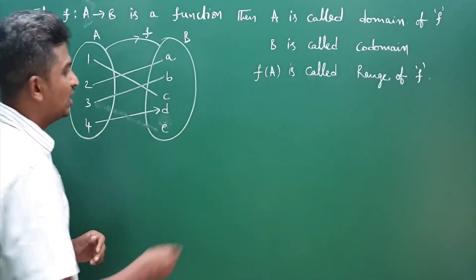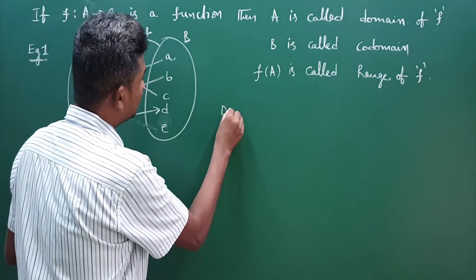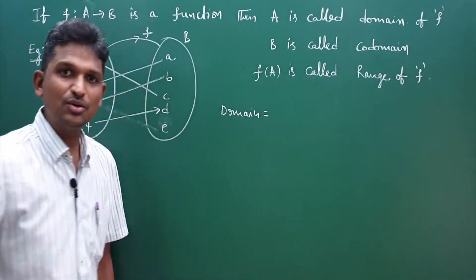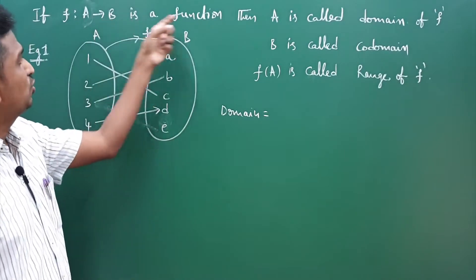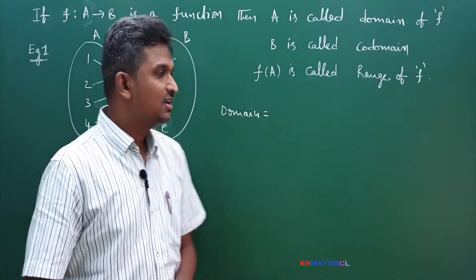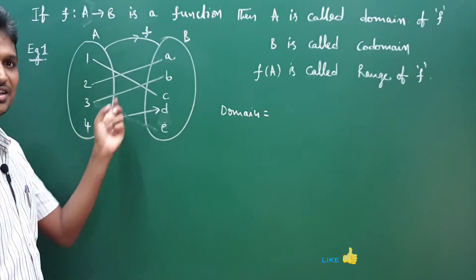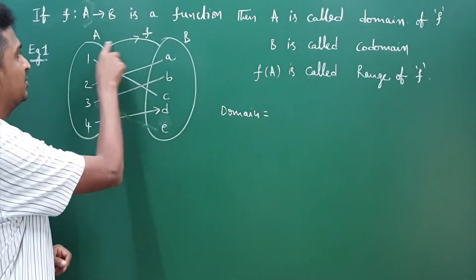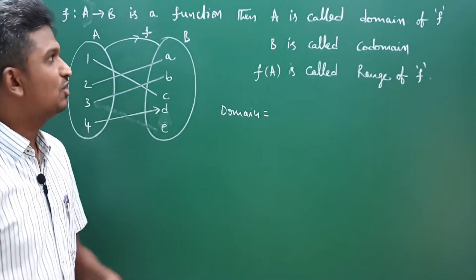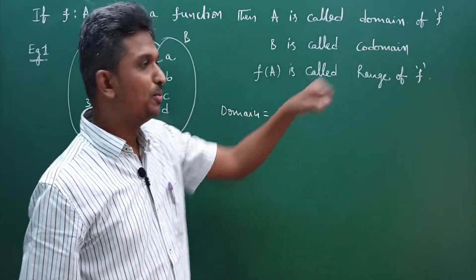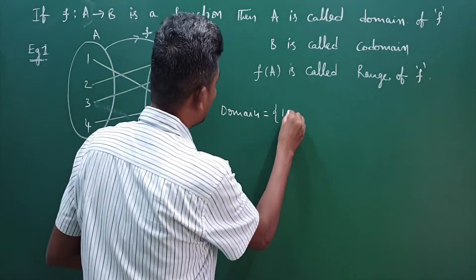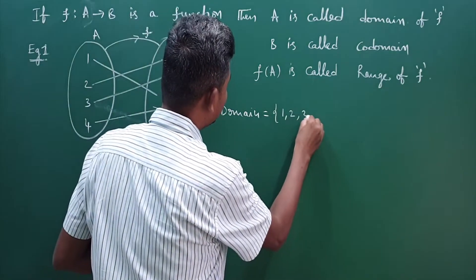Now, in this example, what is domain? If f from A to B is a function, A is called domain. So what is the domain of this function? This set A is called domain. Domain is {1, 2, 3, 4}. Very simple.